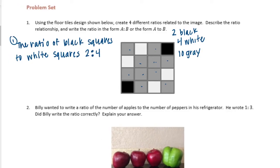Let's do another one. This time let's do white to gray. So the ratio of the number of white squares, or we could even mix it up and do gray squares to white squares.